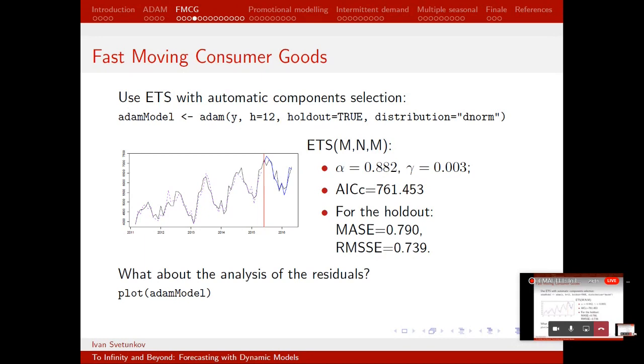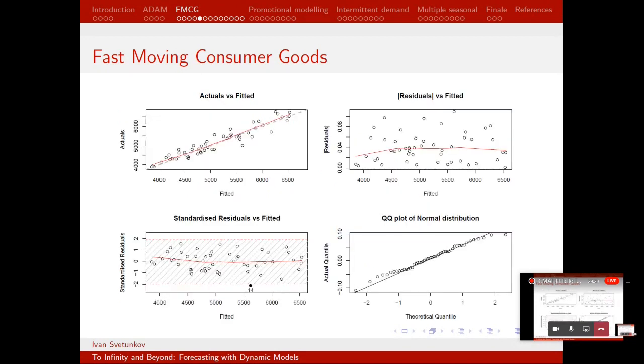This is obviously not a competition. We don't have an aim to select the greatest model, but we want to see how it works. So we fit the model, we can now analyze the residuals. And we do that using the simple command, plot ADAM model. And by default it will produce these four plots. This is actual versus fitted values, the other way around. The closer these points to the gray line, the better it is, meaning that we've explained the data quite well. Residuals versus fitted. We typically would look at heteroscedasticity or something like that here.